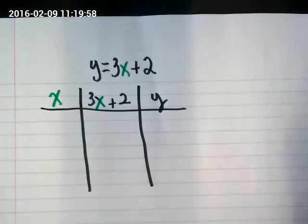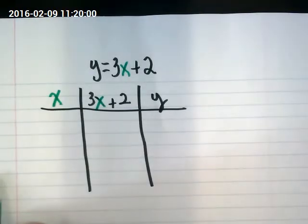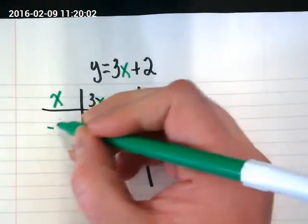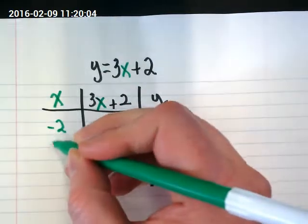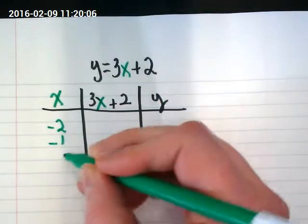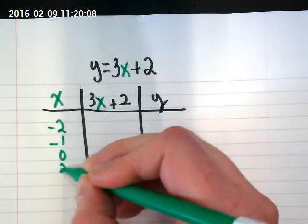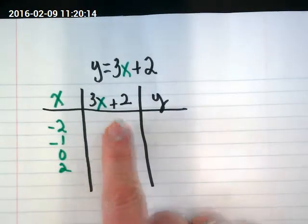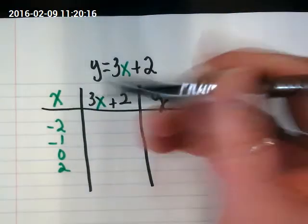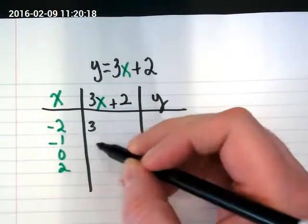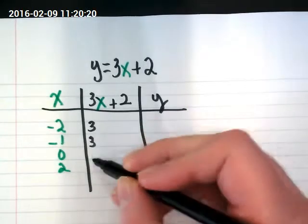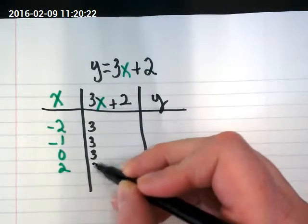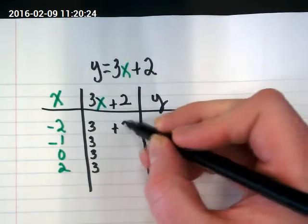And I'm using the color green for x to show you guys that if I put different numbers in for x, like a machine, I can get different values out for y. But my machine is this 3x plus 2.